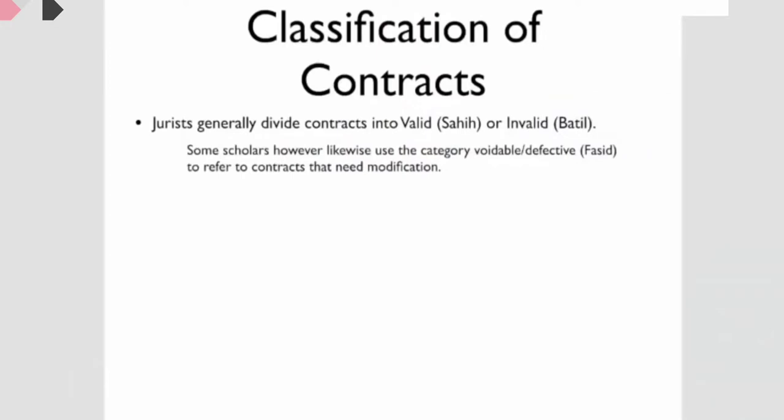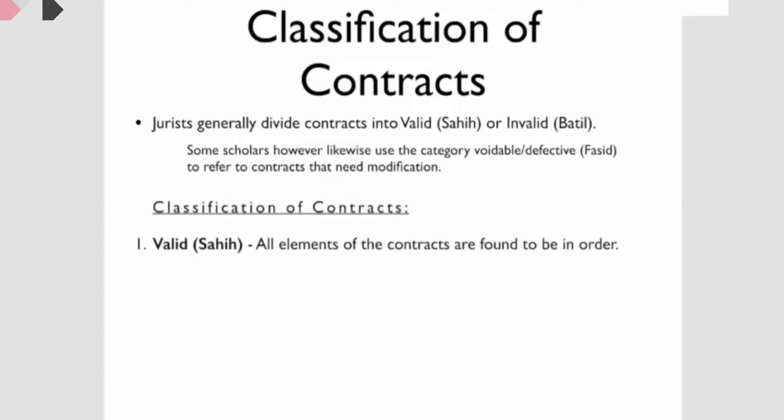which would make a contract voidable, or in a suspended state, where there might be some issues with the contract that need further clarification in order to make it valid. So we would say a valid contract is one where all elements of the contract are found to be in order.